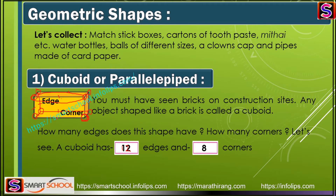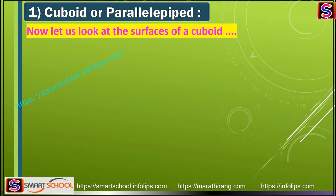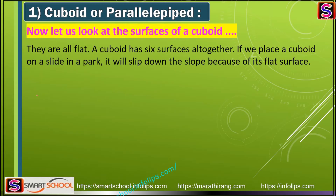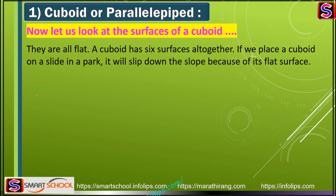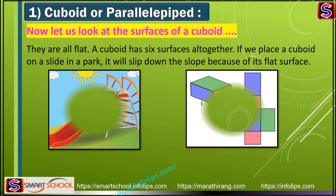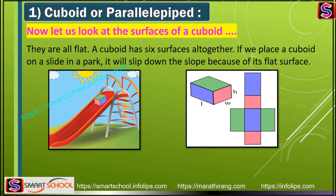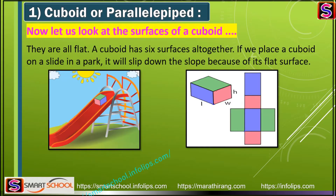Now let's look at the surface of a cuboid. The surface of the cuboid is flat - all sides are flat. The cuboid has six surfaces altogether. If we place a cuboid on a slide in the park, it will slip down the slope because of its flat surface.